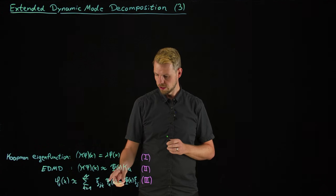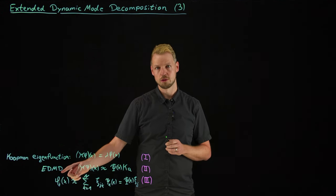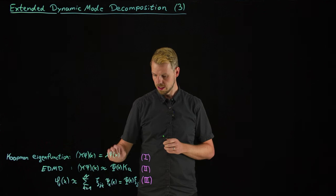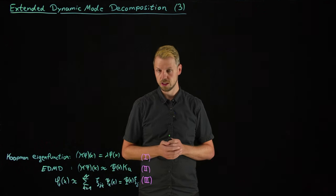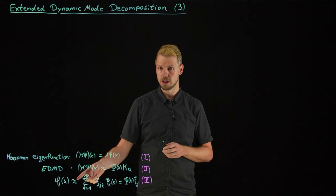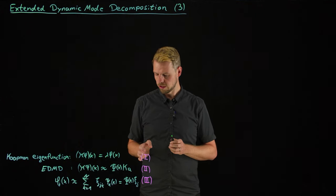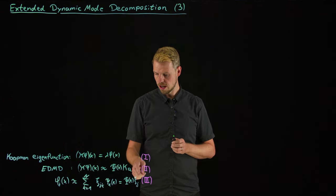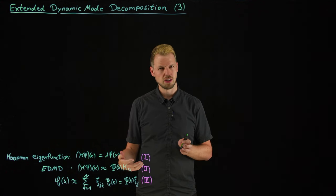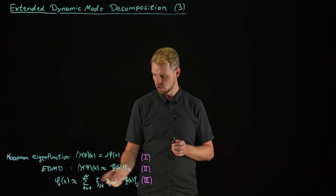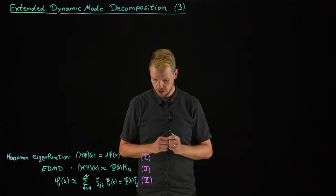If we have this basis, we can hopefully express an eigenfunction approximately in terms of the dictionary times coefficients xi. It's an approximation because we are restricted to the subspace. The question is: what are these xi's? If we can identify them, equation 3 allows us to approximately compute the Koopman eigenfunctions.